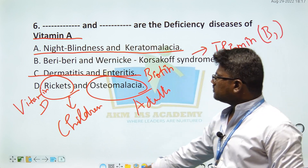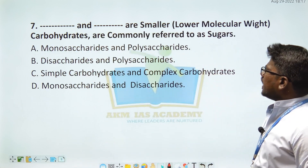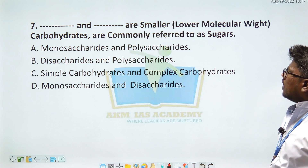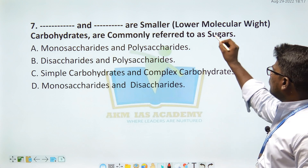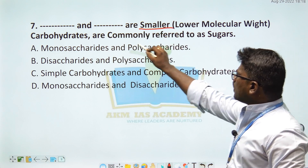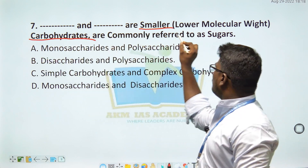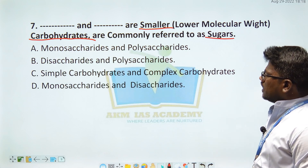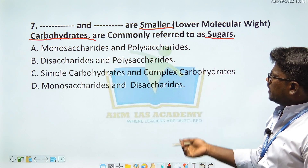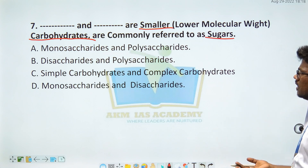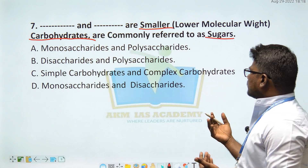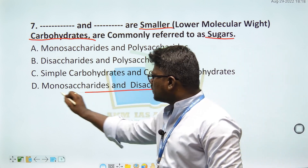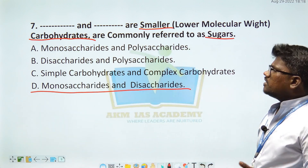Next question: Dash and dash are the smaller, lower molecular weight carbohydrates commonly referred to as sugars. Option D — monosaccharides and disaccharides — is the right answer. Monosaccharides and disaccharides are simple sugars, as opposed to polysaccharides which are complex carbohydrates.